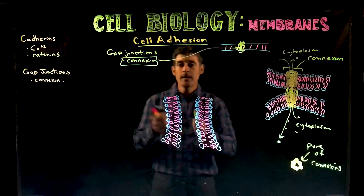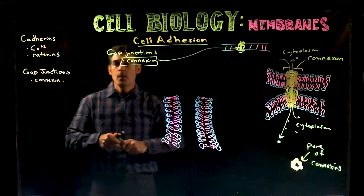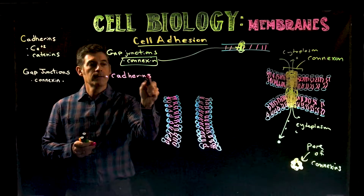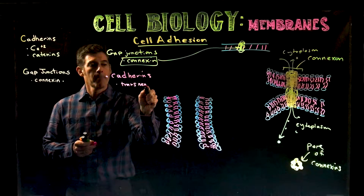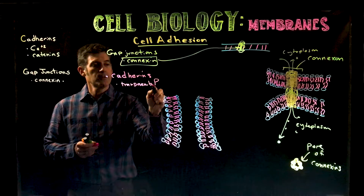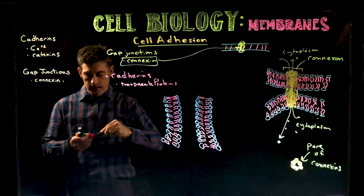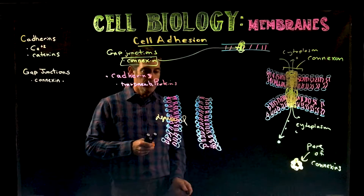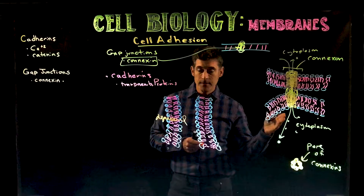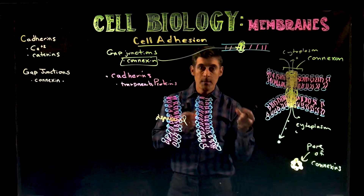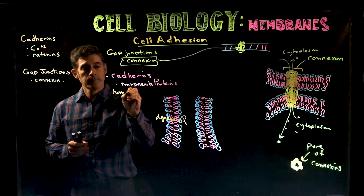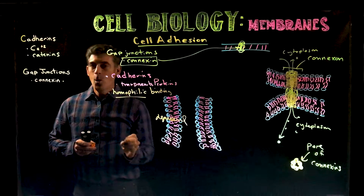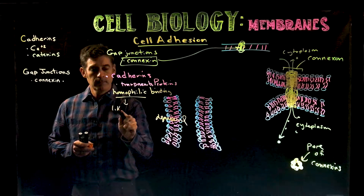That's cell adhesion with gap junctions. Now we're going to look at cell adhesion with an important group of proteins called cadherins. Cadherins are another group of transmembrane proteins. Cadherins are broken down into different groups or categories based on their unique ability to bind. They have what's called homophilic binding, which means they only bind others like them — like binding.